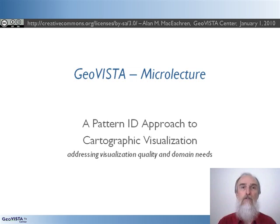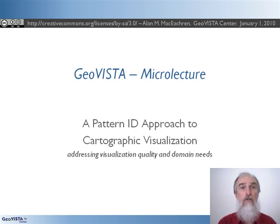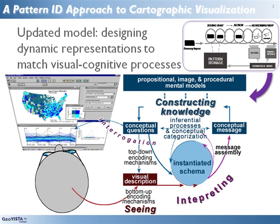I'm Alan McEachran, Director of the GeoVista Center at Penn State. This GeoVista Micro Lecture continues discussion of a Pattern Identification Approach to Cartographic Visualization, the 1990 paper I produced with John Ganter. If you've not yet viewed Part 1 in this series, I encourage you to start there. In the previous micro lecture, I outlined the core conceptual pattern identification framework for cartographic visualization that we introduced there. Here, I'll highlight two additional points raised in that paper that remain important research issues.